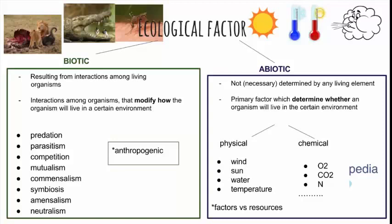Today we are mostly going to talk about abiotic factors. Those are factors that are not living by nature — it's a matter of physical or chemical properties of the environment that the animal or any other living creature is living in. They are basically excluding factors. Biotic factors modify how an organism will live somewhere; however, abiotic factors determine whether an organism will be able to survive in a certain area. They can be divided into physical and chemical, and they can also be considered as factors or resources — factors are unlimited, while resources are something that is limiting, like water in a certain area.